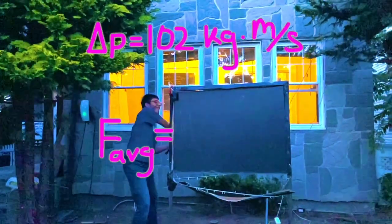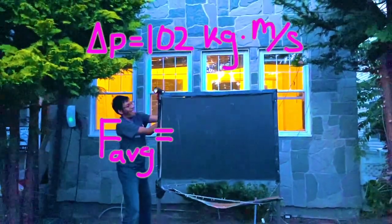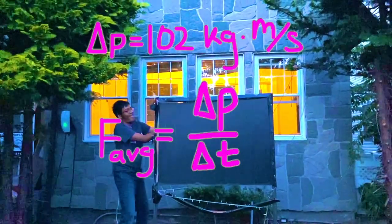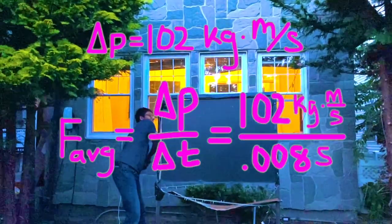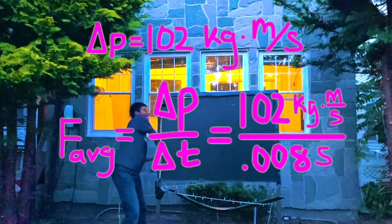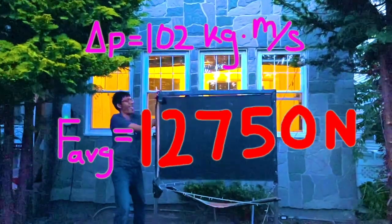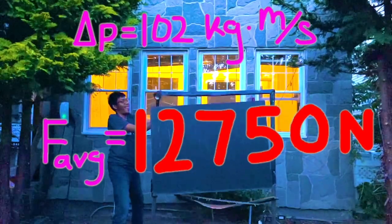Now we can find the average force. Average force is going to be what? It's going to be change in momentum over change in time, right? Delta p over delta t. Plug it in. You get 102 over 0.008 equals 12,750 newtons.